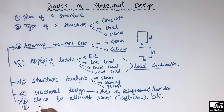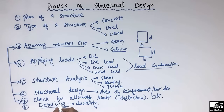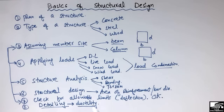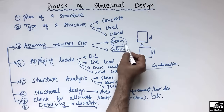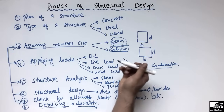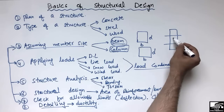Once the allowable limits are satisfied, the last step is detailing. Detailing is mainly for improving the ductility of the structure. By providing good detailing of structural members — reinforcement in beams and columns — we can increase the ductility. For example, for a column we should provide lapping at the center, and the detailing rules specify how reinforcement should be placed.